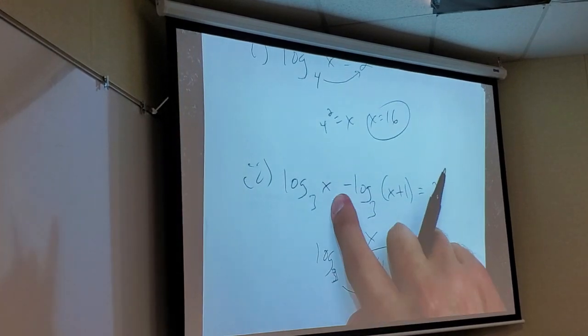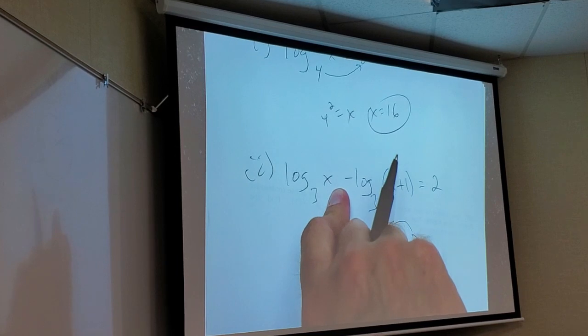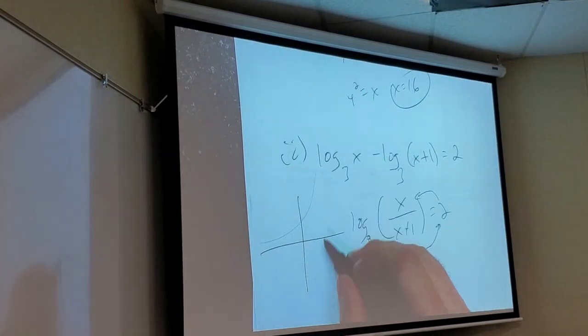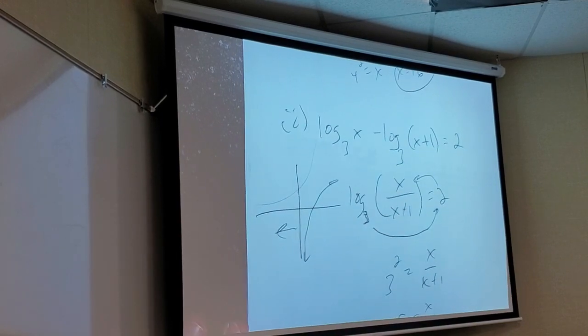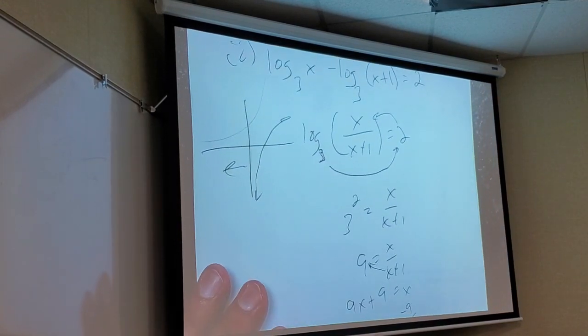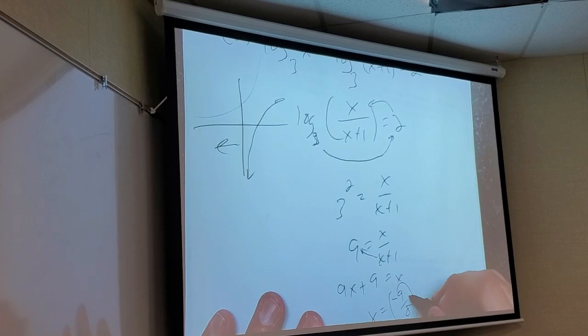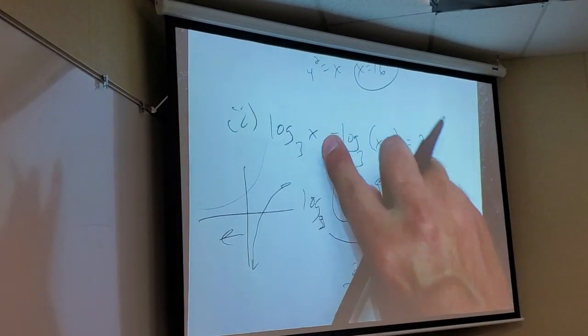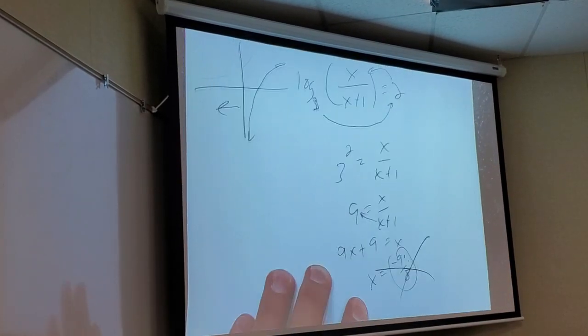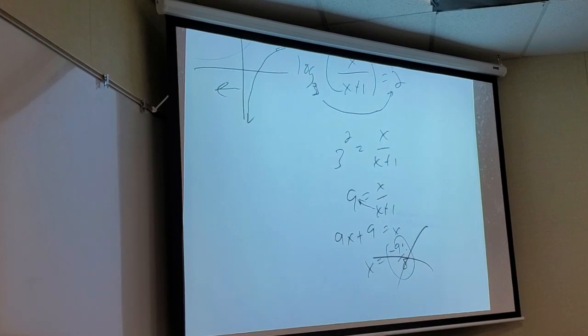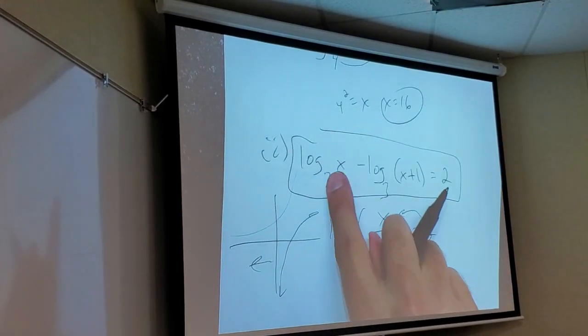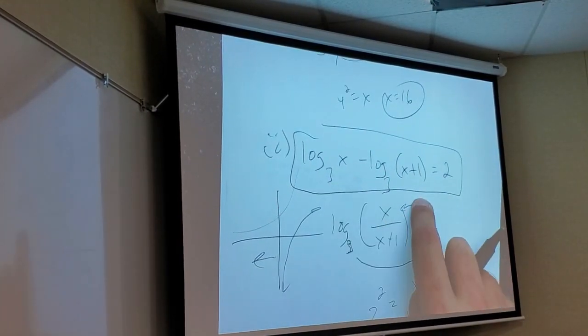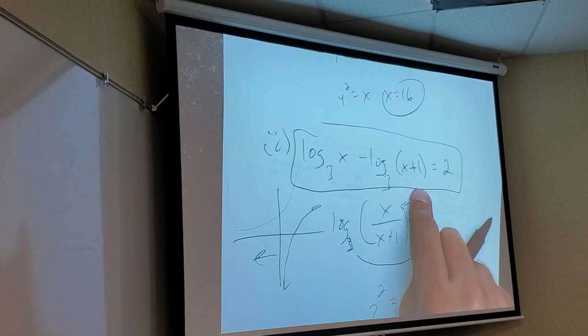One thing though, if I solve this for x, subtract x, subtract 9, I'll actually get negative 9 eighths. Can a logarithm have a negative inside of it? No. Real quick, remember, what's a logarithm look like? Do you see how it can't have negative inputs? This answer would freak that out. No solution.